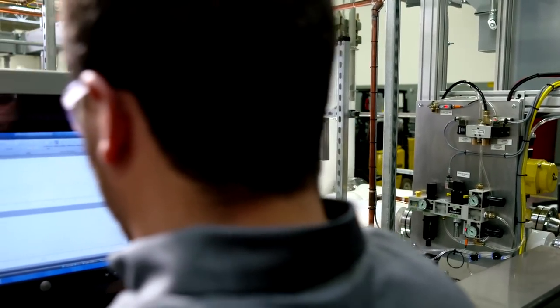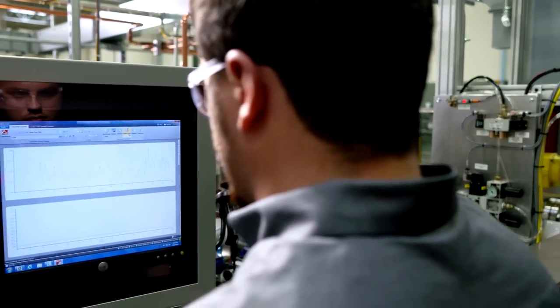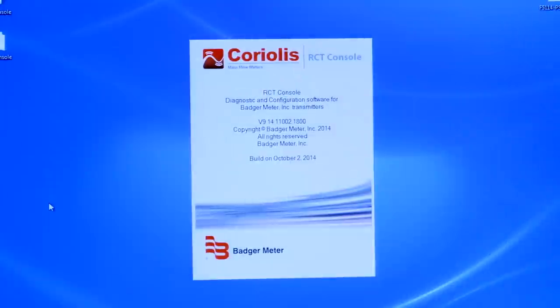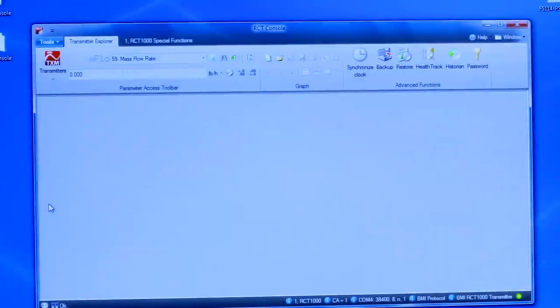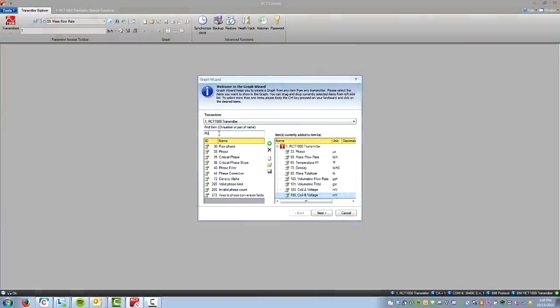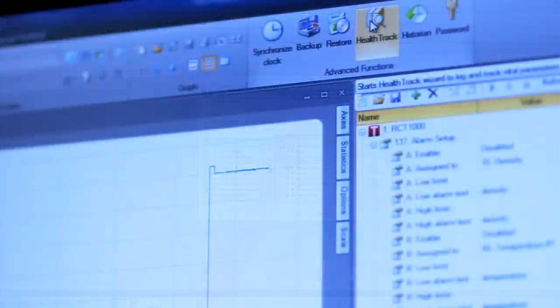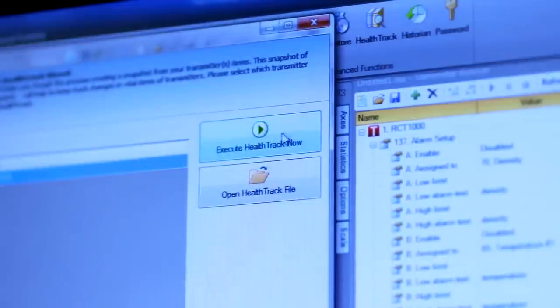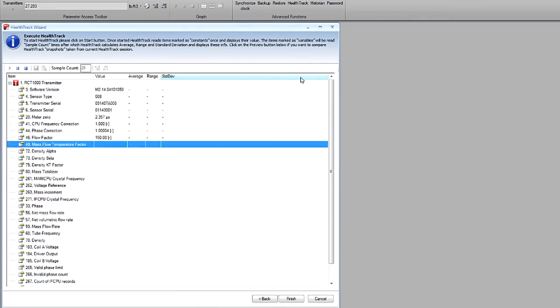At the heart of this system is Badger Meter's RCT console software. Our software features an intuitive dashboard menu that is easy to navigate and manage. Operators are able to obtain advanced data logging and performance trending analysis, as well as system verification provided by the unique health track feature.